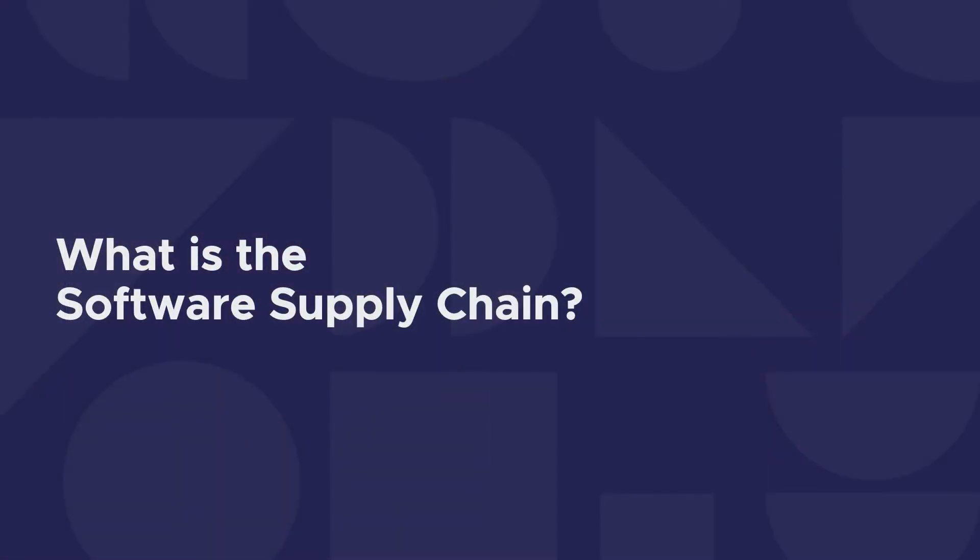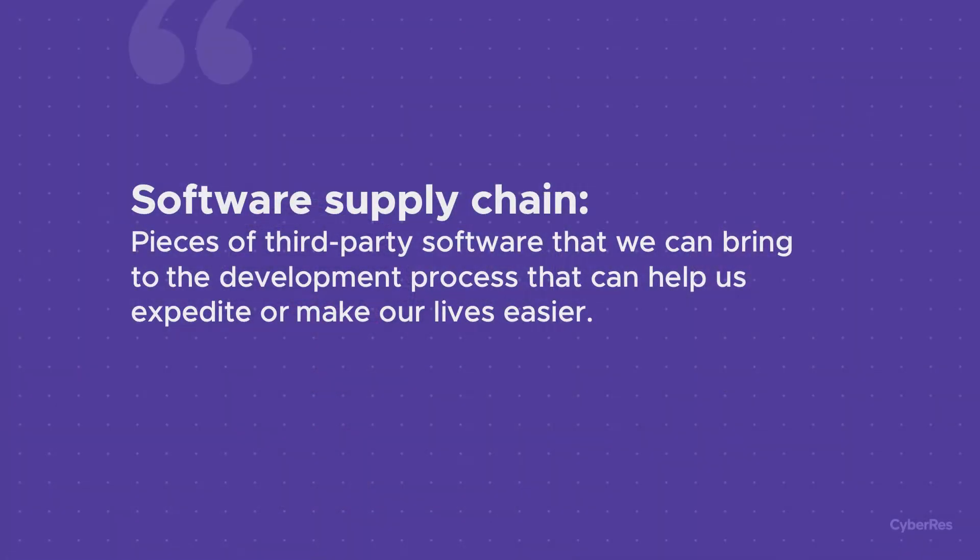Software supply chain refers to pieces of software — third-party software — that we can bring into our development process to help us expedite or make our lives easier, produce software quicker, reusing pieces of software built by other people, other companies, different groups and organizations. Some of them are non-profit organizations, some are individuals dedicated to delivering that, and some are organizations that build software as a way to make money. All those pieces are part of what we build in-house — what we could also call custom code or custom software.